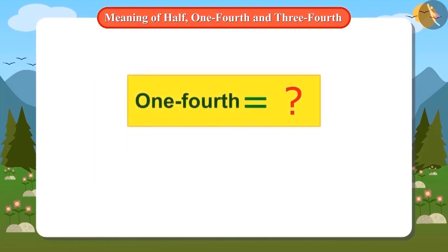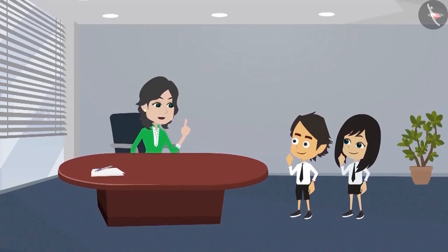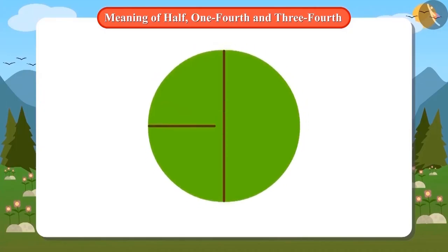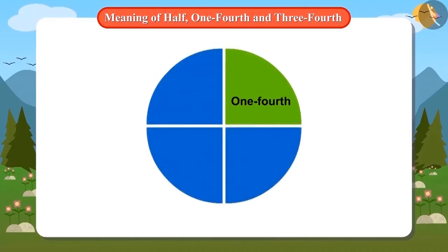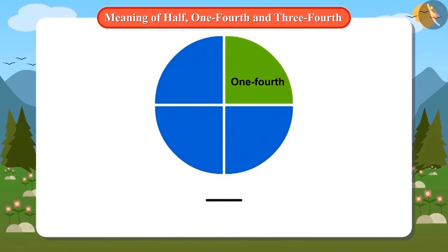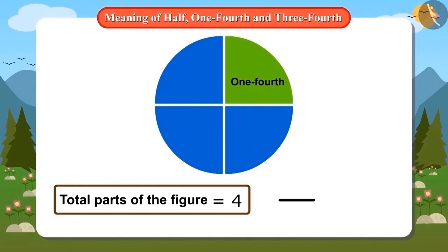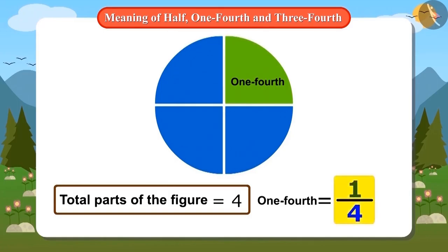And how do we write quarter? Exactly like I have written half, you can also write quarter. Let me try. One out of four equal parts of this figure is called quarter. To write this, we will first draw the line of division and then write the total number of parts of the figure in it. There are a total of four parts of this figure. Therefore, we will write four under the line and one out of these four will be quarter. So we will write one above the line. That means to write a quarter, we have to write one out of four.